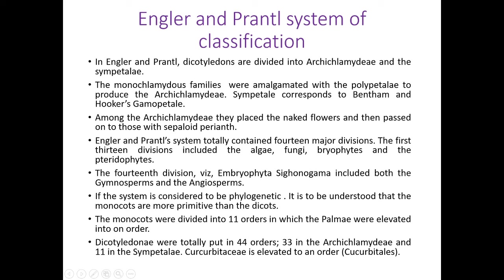Engler and Prantl's system totally contains 14 major divisions. The first 13 divisions include algae, fungi, bryophytes, and pteridophytes. These four groups belong to the cryptogams — algae, fungi, and bryophytes show a thalloid plant body, and pteridophytes show a higher plant body differentiated into root, stem, and leaves. But all four groups are nonflowering, belonging to the cryptogams. The 14th division, embryophyta siphonogama, is divided into gymnosperms and angiosperms. They separate gymnosperms from angiosperms — this is considered a major merit of this system, as gymnosperms have no fruit formation while angiosperms do.